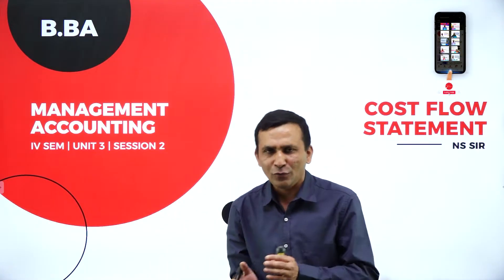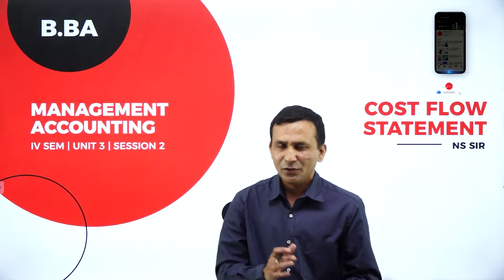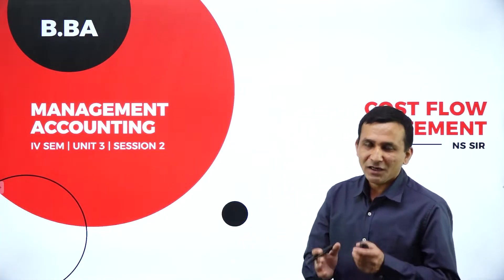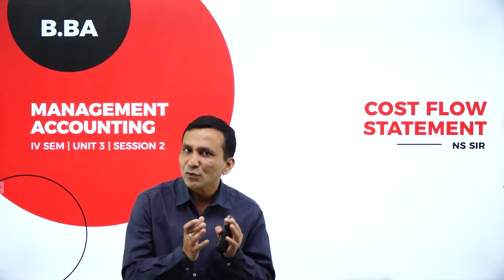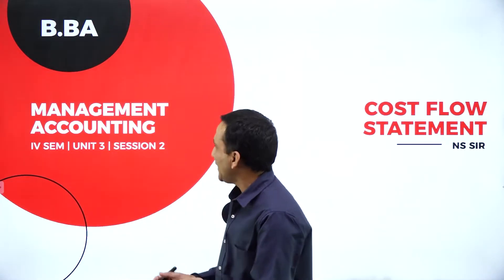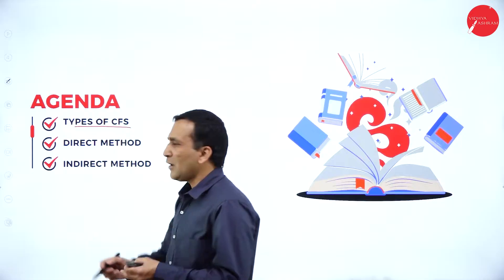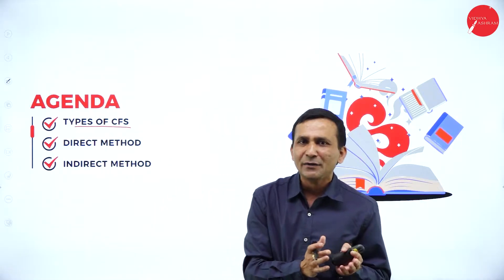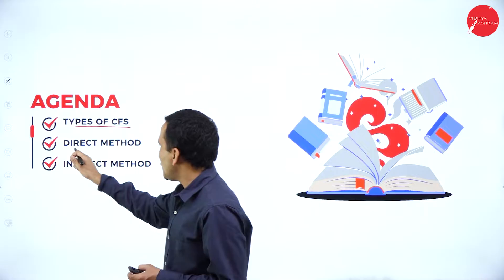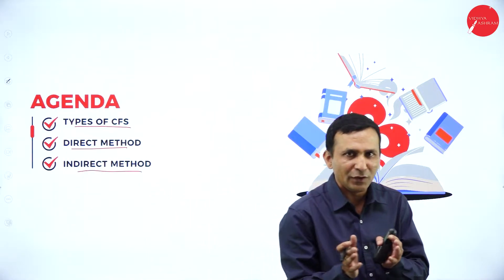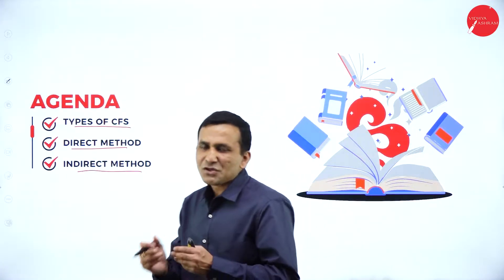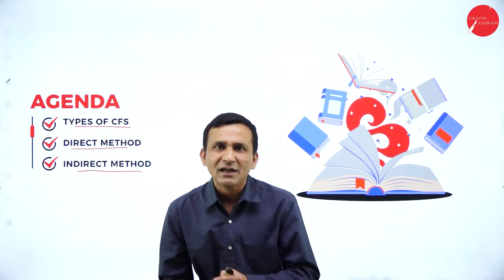Management uses the cash flow statement for decision-making, and easily they can check the performance of the company. In the last session, I explained completely the theory factors. Today my agenda is the types of cash flow statements — we are using a direct method and indirect method. Before starting a problem, we just recall the activity called operating activity.